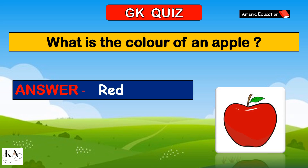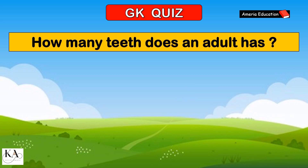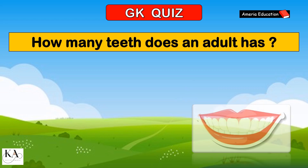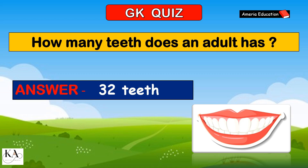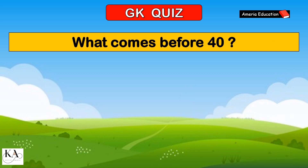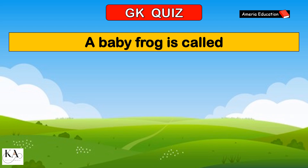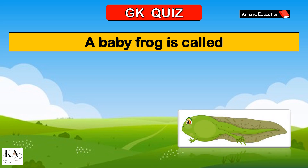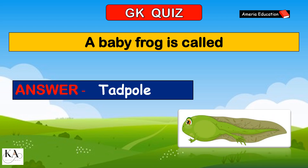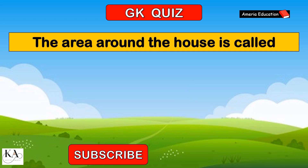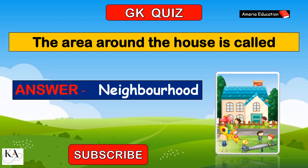60 seconds. How many legs does a goat have? 4 legs. What is the color of an apple? Red. How many teeth does an adult have? 32 teeth. What comes before 40? 39. A baby frog is called a tadpole. The area around the house is called the neighborhood.